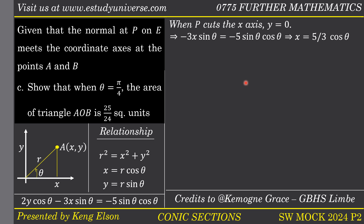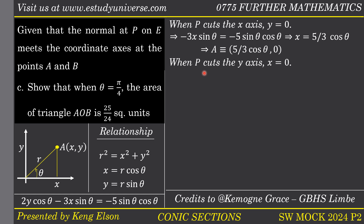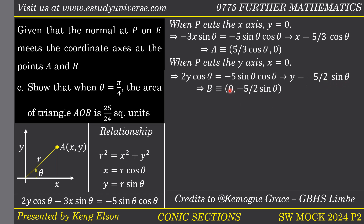When the normal meets the y-axis, x equals 0. Substituting gives 2y cos theta equals negative 5 sin theta cos theta. Dividing by 2 cos theta gives y equals negative (5/2) sin theta. So point B on the y-axis has coordinates (0, negative (5/2) sin theta).